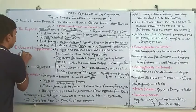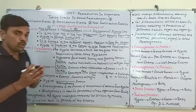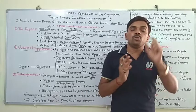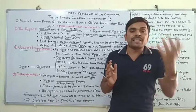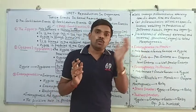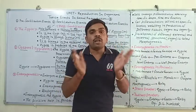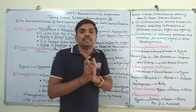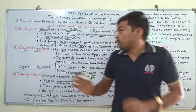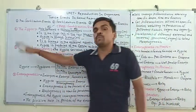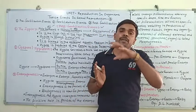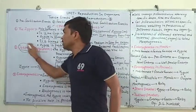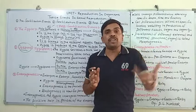Next हम बात करें Oospore या Zygospore के बारे में। Zygote formation के बाद जो Zygote है वो कुछ समय के लिए rest करता है — resting period में जाता है। उस resting period में Zygote अपने चारों ओर एक thick membrane develop कर लेता है, एक thick cover बना लेता है। उस structure को हम Zygospore या Oospore कहते हैं। Exam में Zygote dormancy किसे कहते हैं — यह Oospore ही represent करता है।